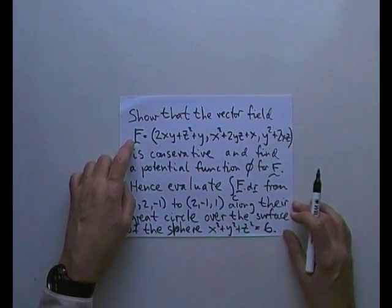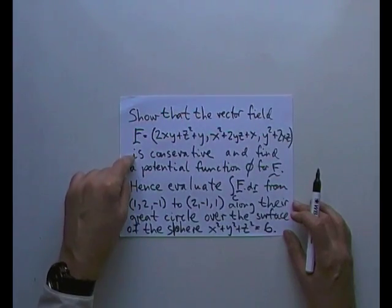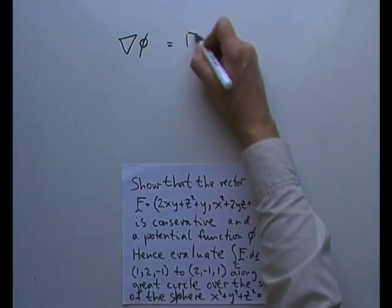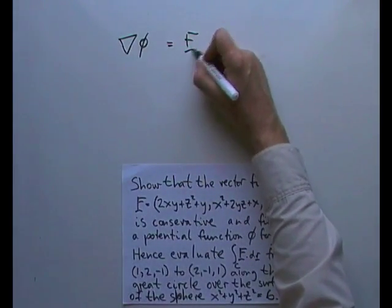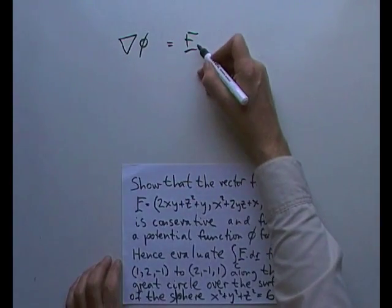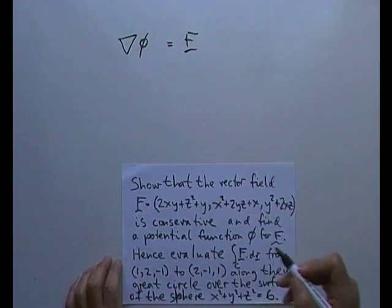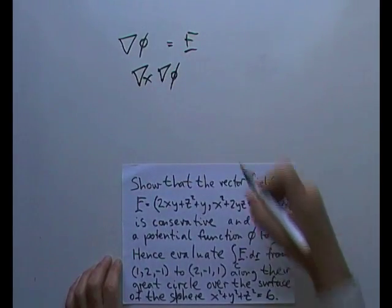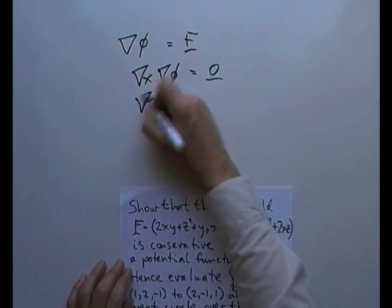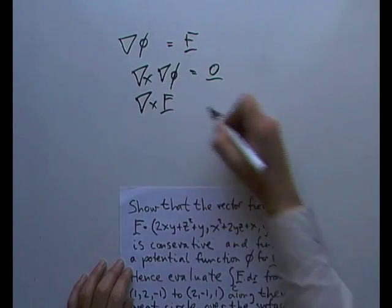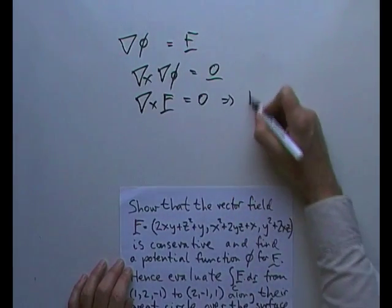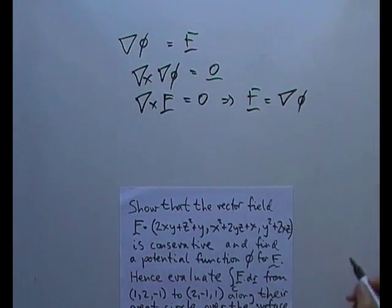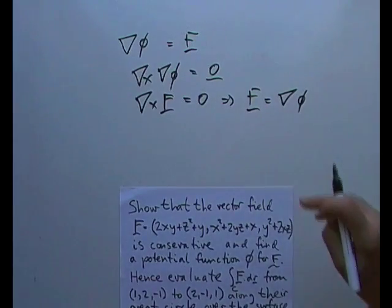First part of it would be show that this vector field is conservative. Well, the grad of any scalar field will produce a vector field. However, not every vector field comes from the grad of a scalar field, but you know that if you take the curl of the grad of a scalar field that should equal zero. Which means if you take the curl of a vector field and it equals zero, that means that the vector field will be expressed as the grad of a scalar field which would then be called the potential for that.